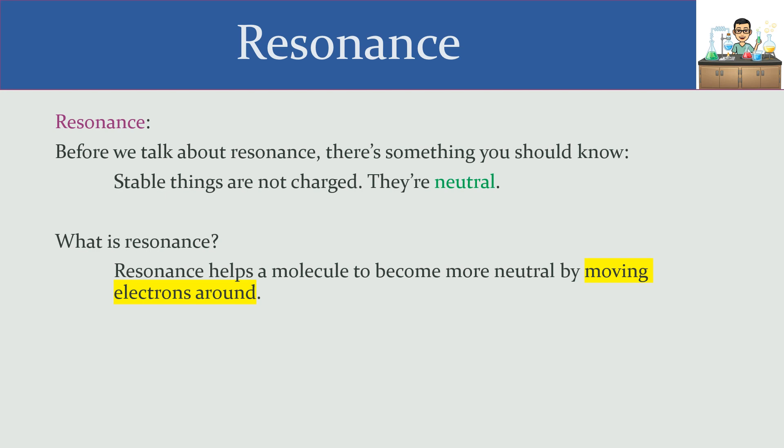Electrons are the only things that are allowed to move around if we're going to call something a resonance feature. If atoms move around, that's no longer resonance. In order to move things around, you have to have a place for them.